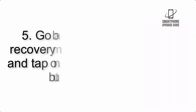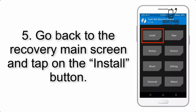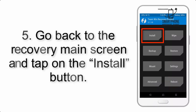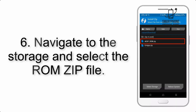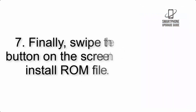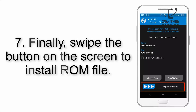Step 4: Swipe the button to wipe the device. Step 5: Go back to the recovery main screen and tap on the Install button. Step 6: Navigate to the storage and select the ROM zip file.